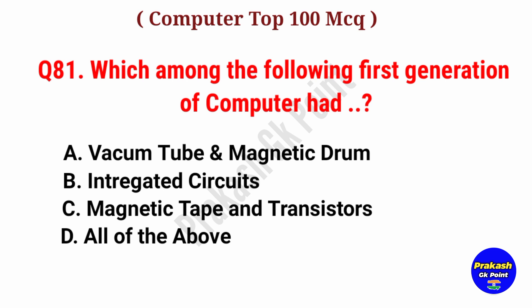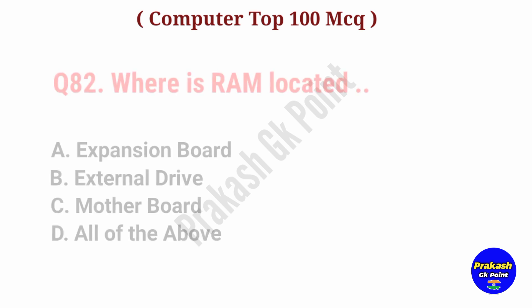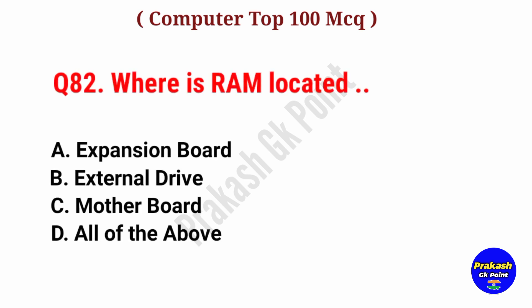Which among the following did the first generation of computers have? Answer: Option A, Vacuum Tube and Magnetic Drum.